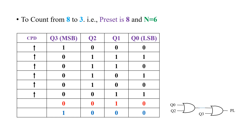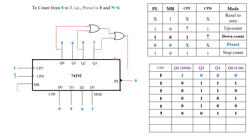Now let us get into the further details. This is going to be the configuration we are going to have. Q0, Q2, and Q3 — the combination is connected to the combination of these two-input NOR gates. As a one-time setup, we are going to provide PL equal to 0 and set D0 to D3 equal to 1000. Preset operation is being enabled so that the value present on D0 to D3 will shift to Q0 to Q3. The output is 1000 — whatever value we are supposed to start from is now available at the output.